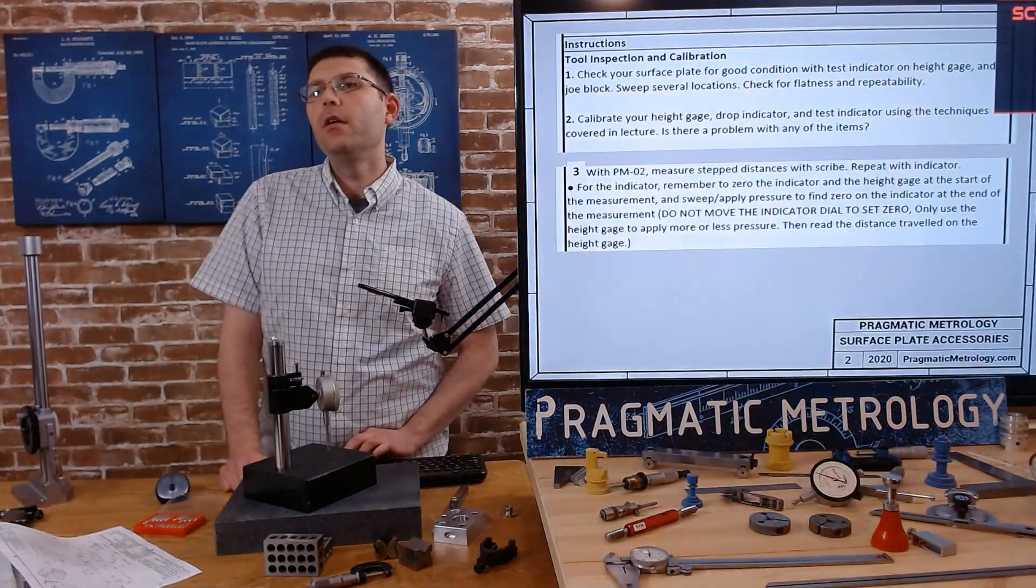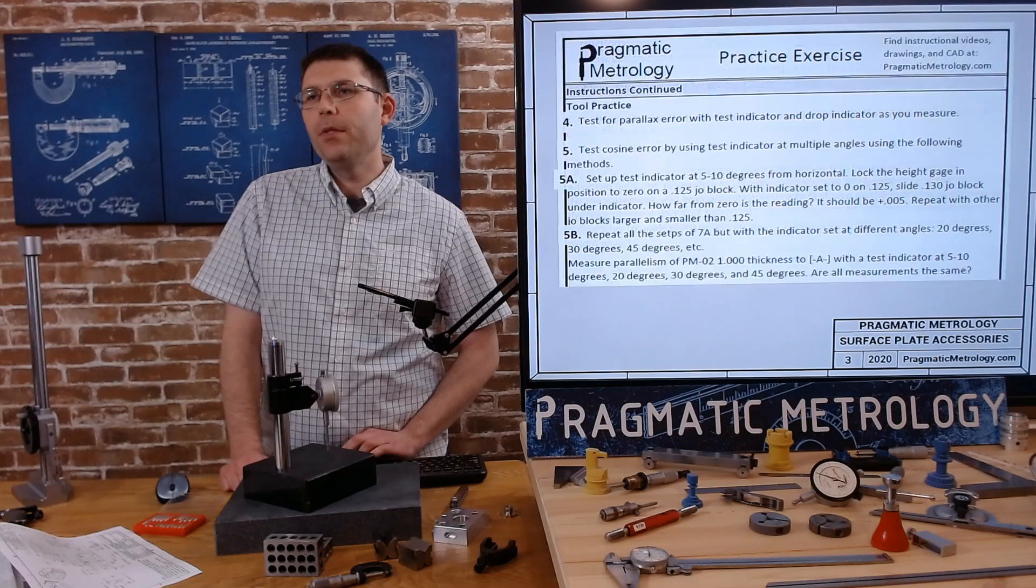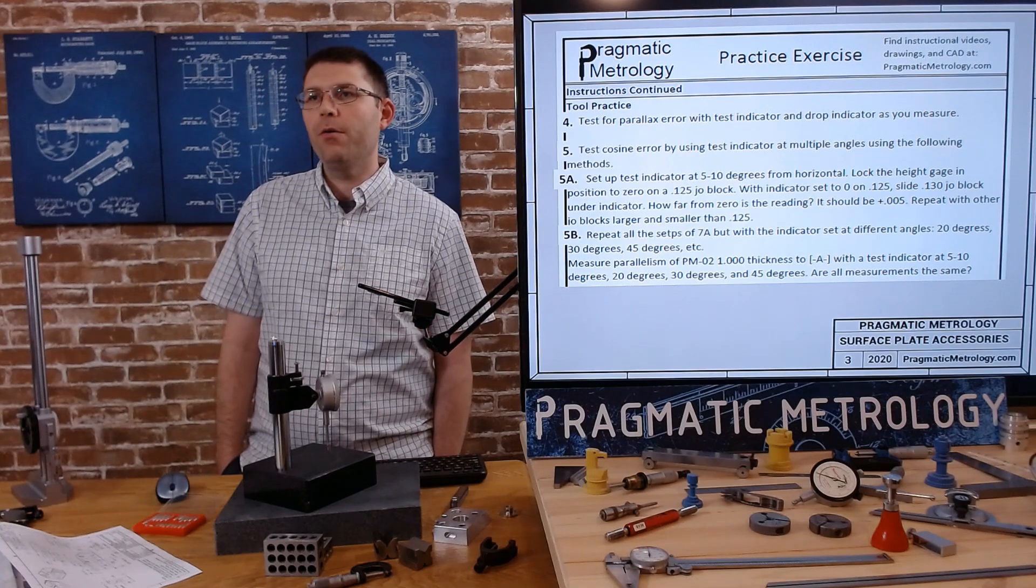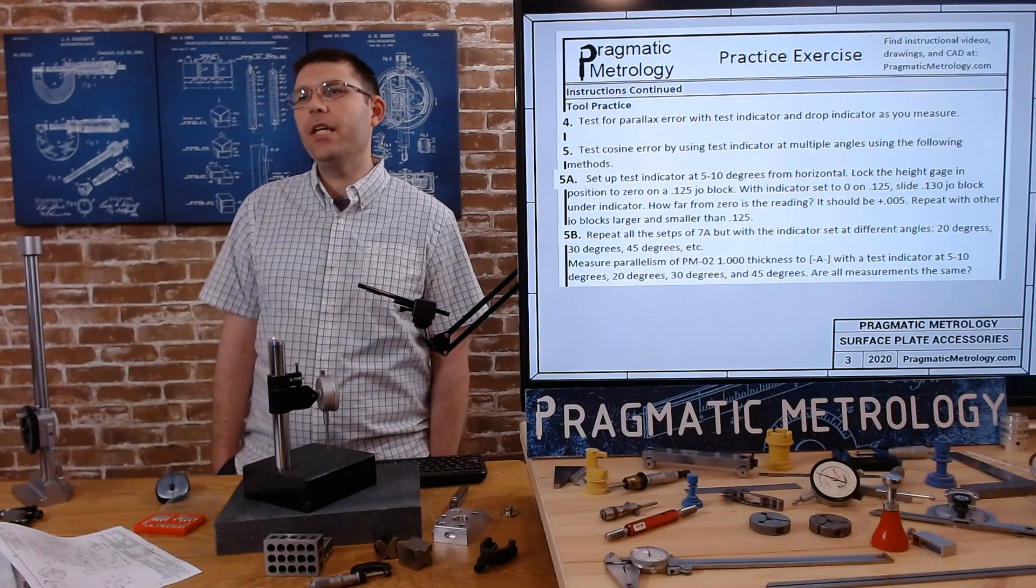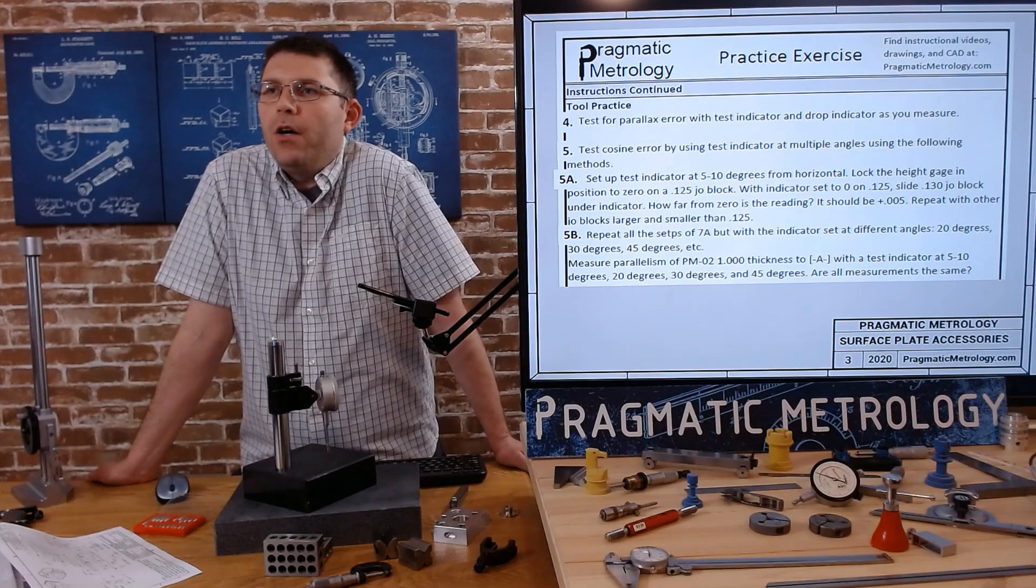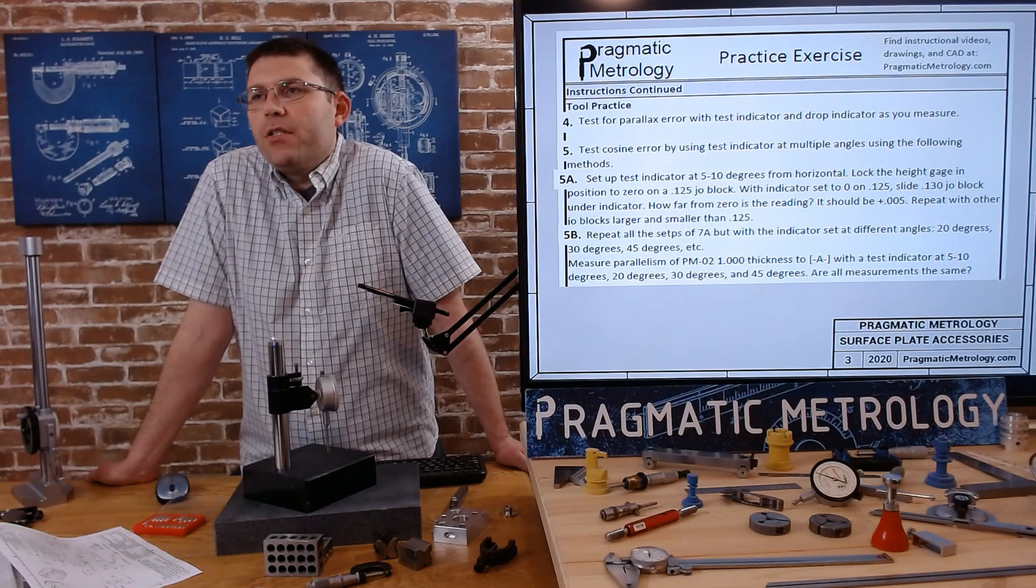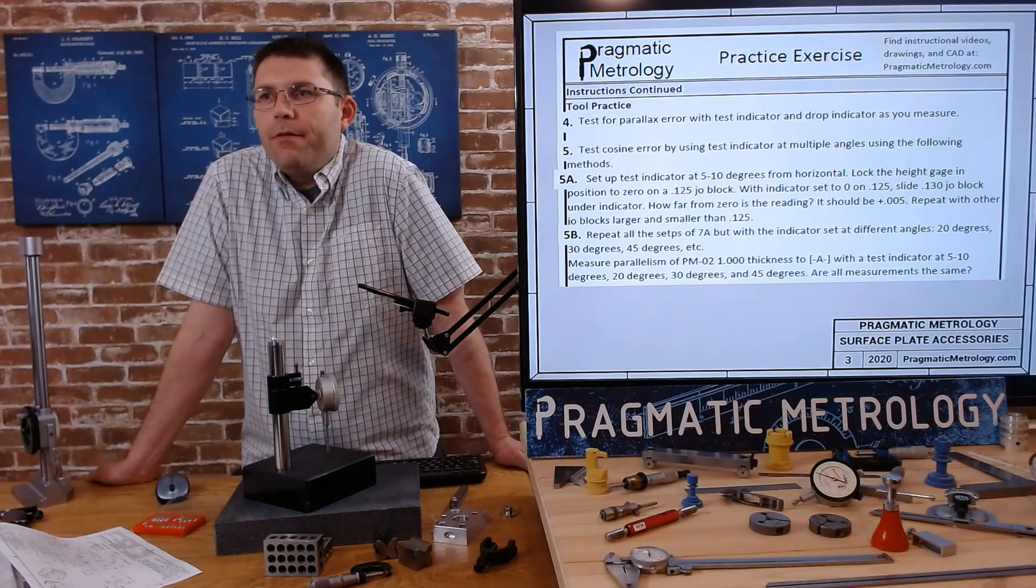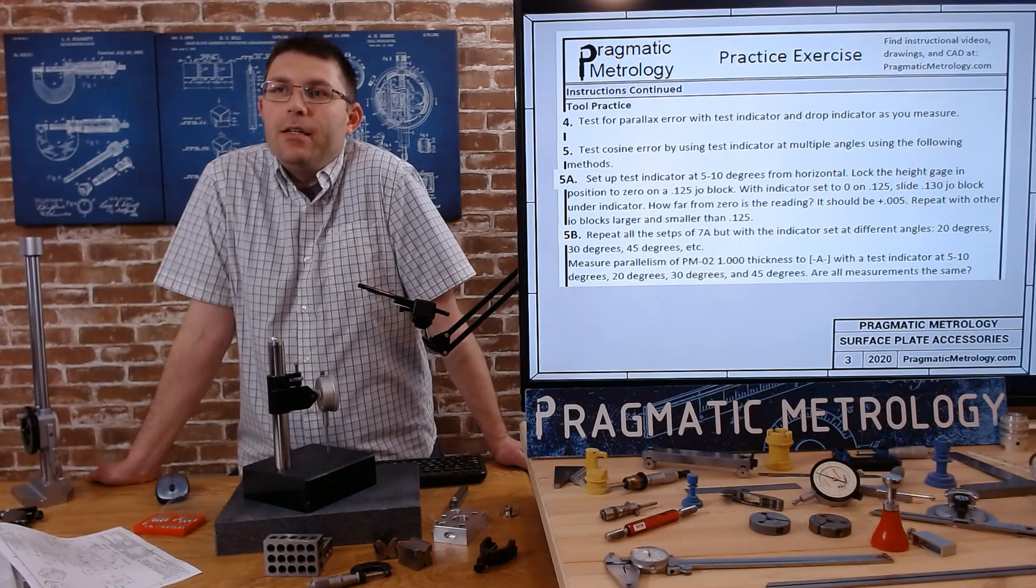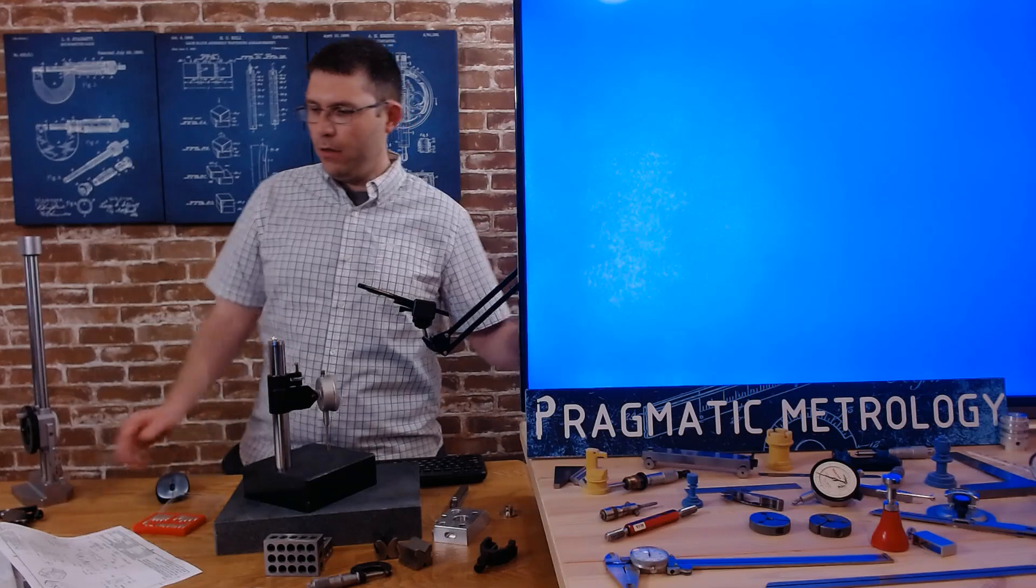So let's flip back to our exercise. We've done exercises. Number two takes too long to do. I did it in the training videos. We've done number three and now we did four and we're going to do five right now. We're going to test for cosine error using a test indicator at multiple angles, following using the following methods. So first thing, we'll set up a test indicator about five to 10 degrees from horizontal. We'll lock it down. We'll run it zero on a 0.125 gauge block. And then we're going to slide the 130 gauge block and look for a plus five reading. And then we'll do some other gauge blocks and we'll look for some potential error there. Then we're going to repeat it at a different angle.